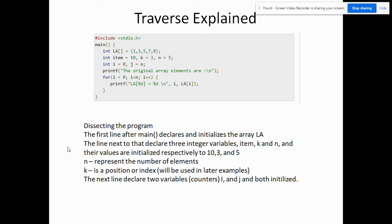Here we have now the explanation of the traverse program. Let's try to dissect the program. It says here that the first line after the main, which is actually the name of the function or the main function, declares and initializes the array LA. This one declares the array LA and at the same time, initializes the elements or the values of the array.